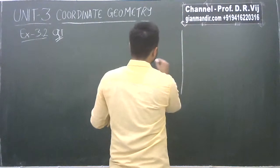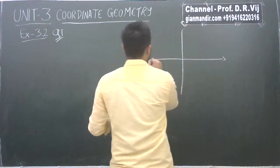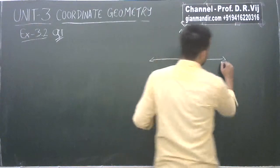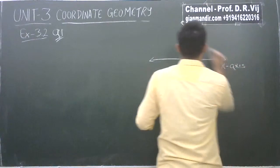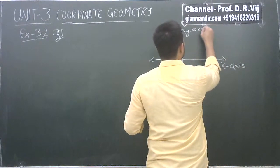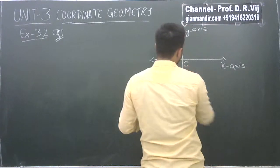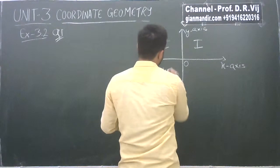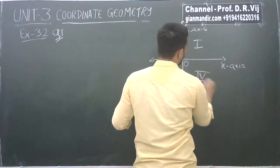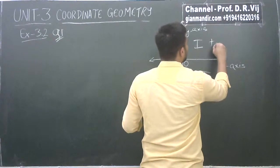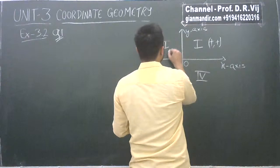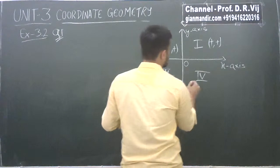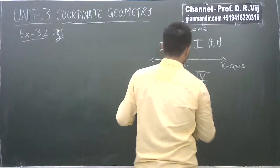If you have seen the previous video, then in that introduction I told you about each and every part of the Cartesian plane. This is the Cartesian plane. This is the X axis. This is the Y axis. This is origin O, the point where they meet. This is the first quadrant, this is the second quadrant, this is the third quadrant, and this is the fourth quadrant. In the first quadrant it is positive, positive. In the second, it is negative, positive. In the third, both X and Y are negative. And in the fourth, X is positive and Y is negative.